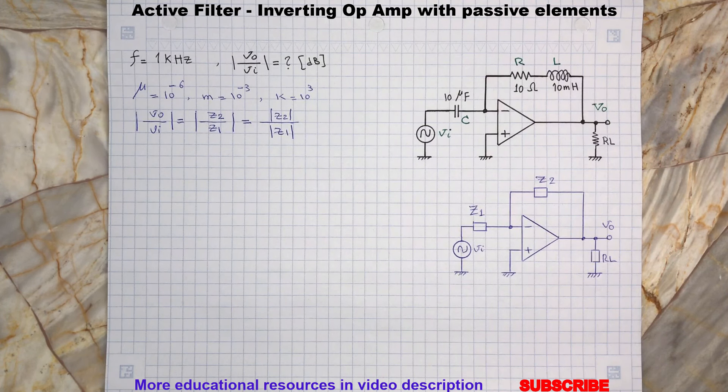As you can see here, Z1 only consists of capacitor C. So let's find its reactance at frequency of 1 kilohertz.